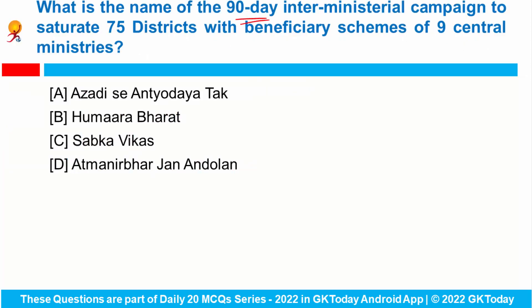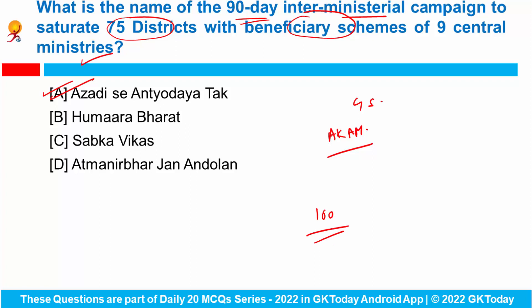What is the name of the 90-day inter-ministerial campaign to saturate 75 districts with beneficiary schemes of 9 central ministries? Rural Development Minister Giriraj Singh launched Azadi Se Antyodaya Tak Yojana, a 90-day inter-ministerial campaign under Azadi Ka Amrit Mahotsav. The identified districts are aligned with the birthplaces of 100 Indian freedom fighters, and the campaign aims to saturate 75 districts with 17 beneficiary schemes of 9 central ministries.